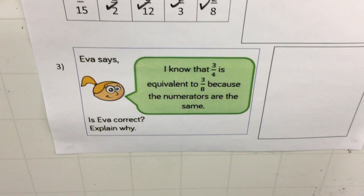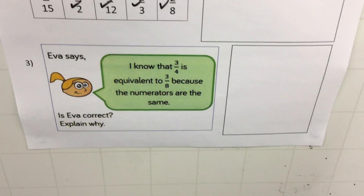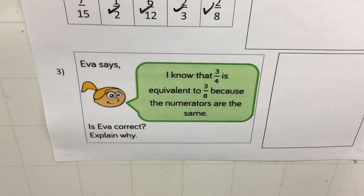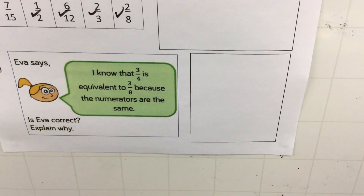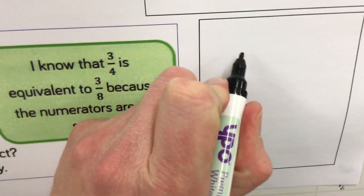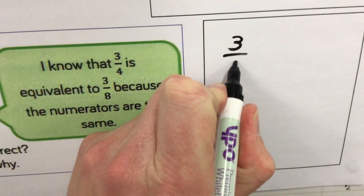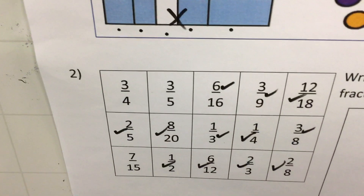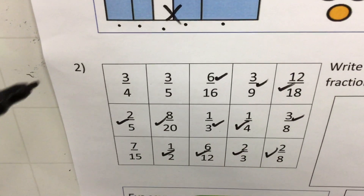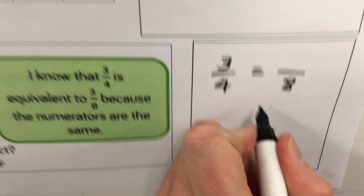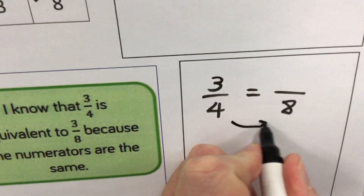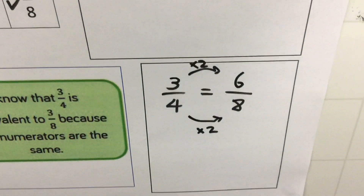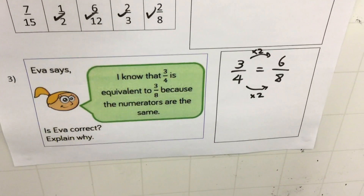Eva says she knows that three quarters is equivalent to three eighths because the numerators are the same. We can use what we've got here to answer this — three quarters is not equivalent to three eighths. If we want to make three quarters into eighths, we multiply the denominator by two and must do the same to the top, giving six eighths. So Eva is not correct, and there is our explanation why.